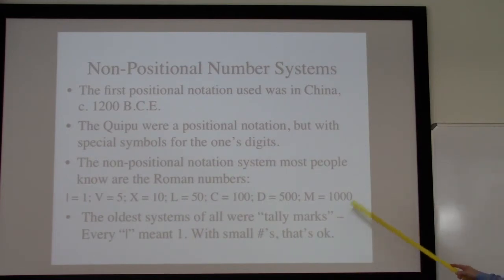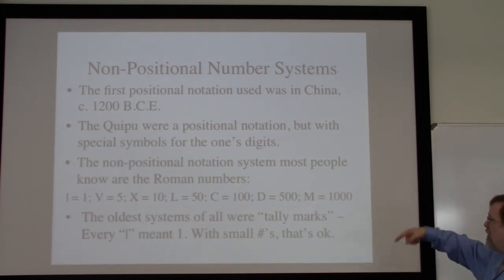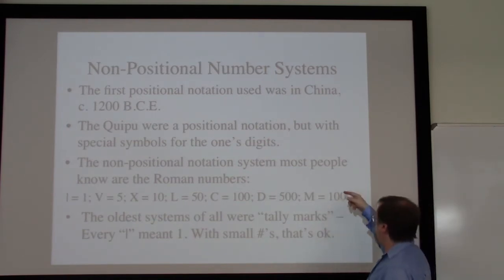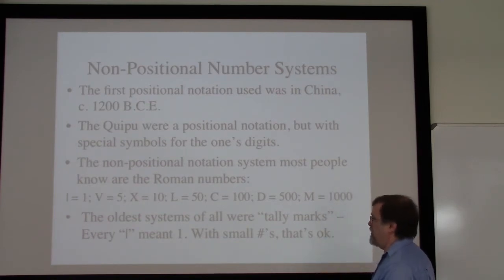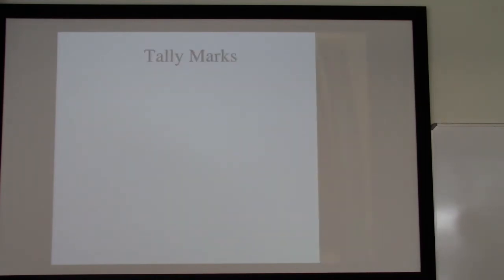Going back even further than Roman numbers, the oldest systems of all are really sort of tally marks. We just make marks on something — a piece of wood, a piece of bone — and mark things off the way that we often do ourselves in keeping track of simple numbers. So let's start our history by looking at a little bit of the tally marks.